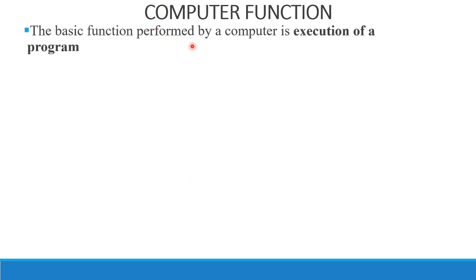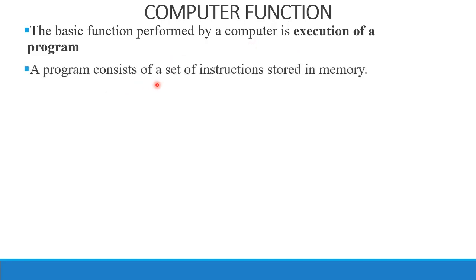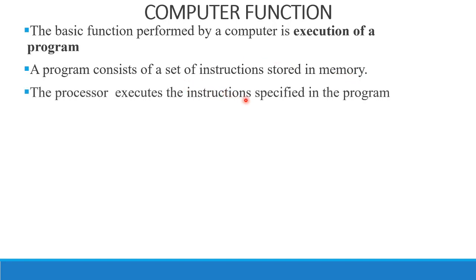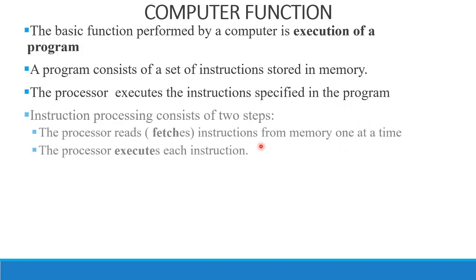We will discuss what is the major function of a computer. A computer consists of a set of instructions stored in memory — that is the program. It's a sequence of instructions stored in memory. When the program is executed, that is an important computer function. The processor executes the instructions specified in the program. Instruction processing is the main thing and it will take 2 steps.